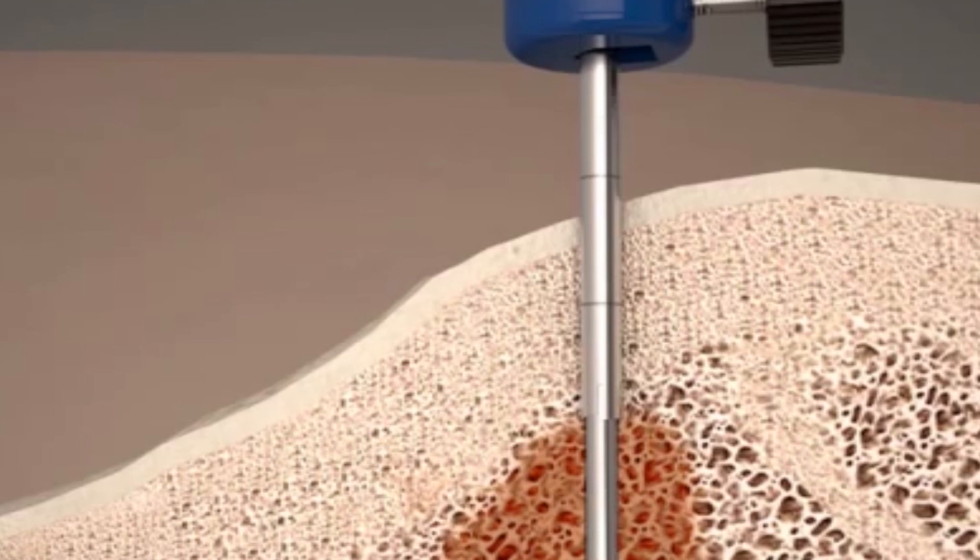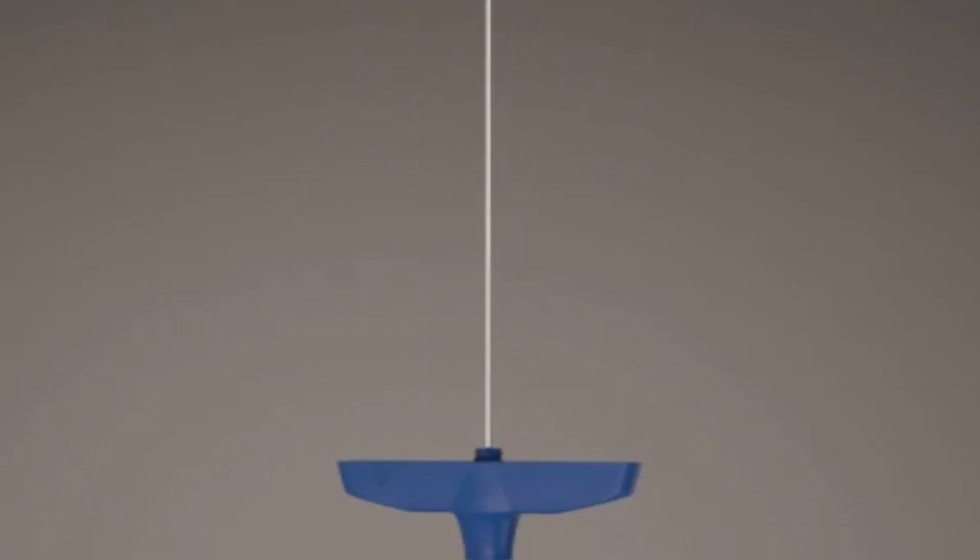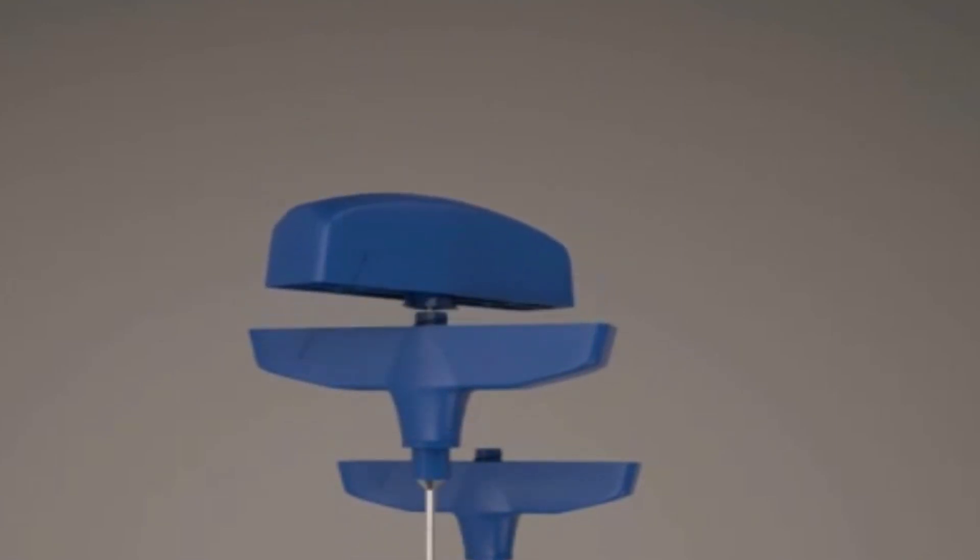Once the desired depth is reached, the biopsy needle is turned counterclockwise for several rotations to sever the bone fibers and release the specimen into the needle. The biopsy needle is then withdrawn and the handle unlocked. The ejector pin is inserted through the handle end of the biopsy needle and the specimen is gently ejected.